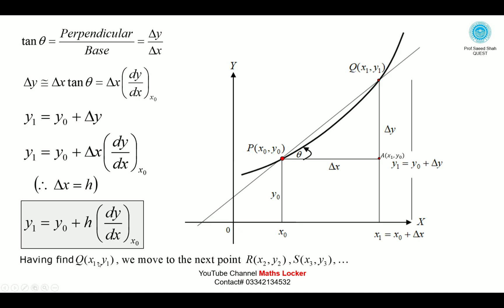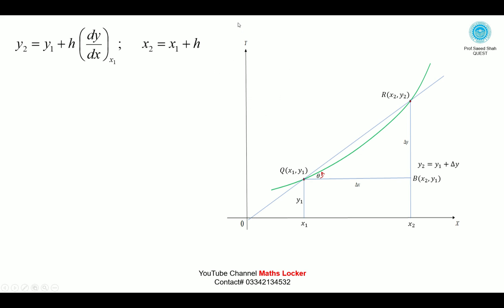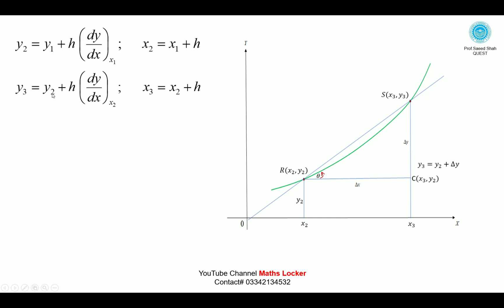Having found Q(x₁, y₁), we move to the next point R(x₂, y₂), then S(x₃, y₃), repeating the process. For points Q and R: y₂ = y₁ + h · (dy/dx)|_{x₁}, and x₂ = x₁ + h. For points R and S: y₃ = y₂ + h · (dy/dx)|_{x₂}, and x₃ = x₂ + h.